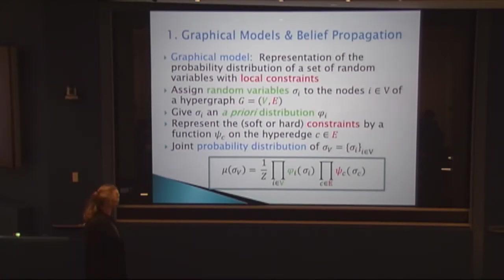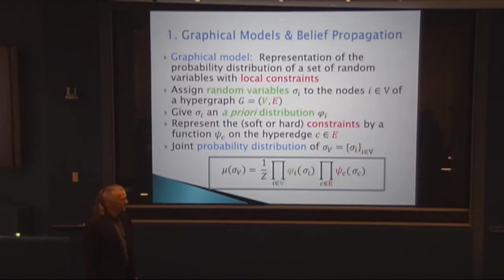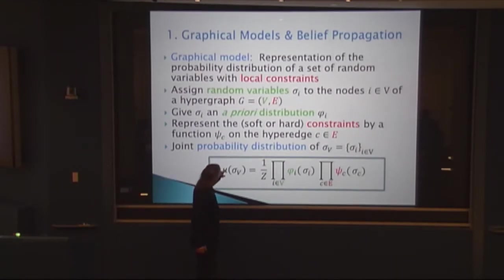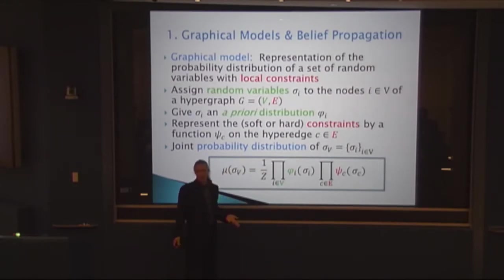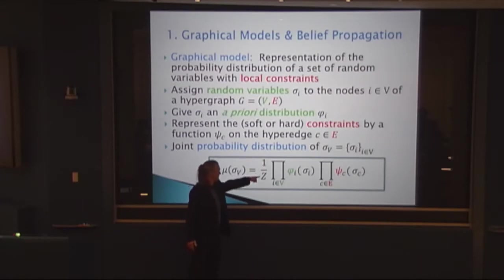Z is a normalization constant — the probability of a given assignment of colors is given by multiplying these numbers. If you multiply them and sum over all possible color assignments, the result might be 20, but a probability distribution should sum to 1, so you divide by 20. Z is chosen such that the sum over all assignments equals 1.